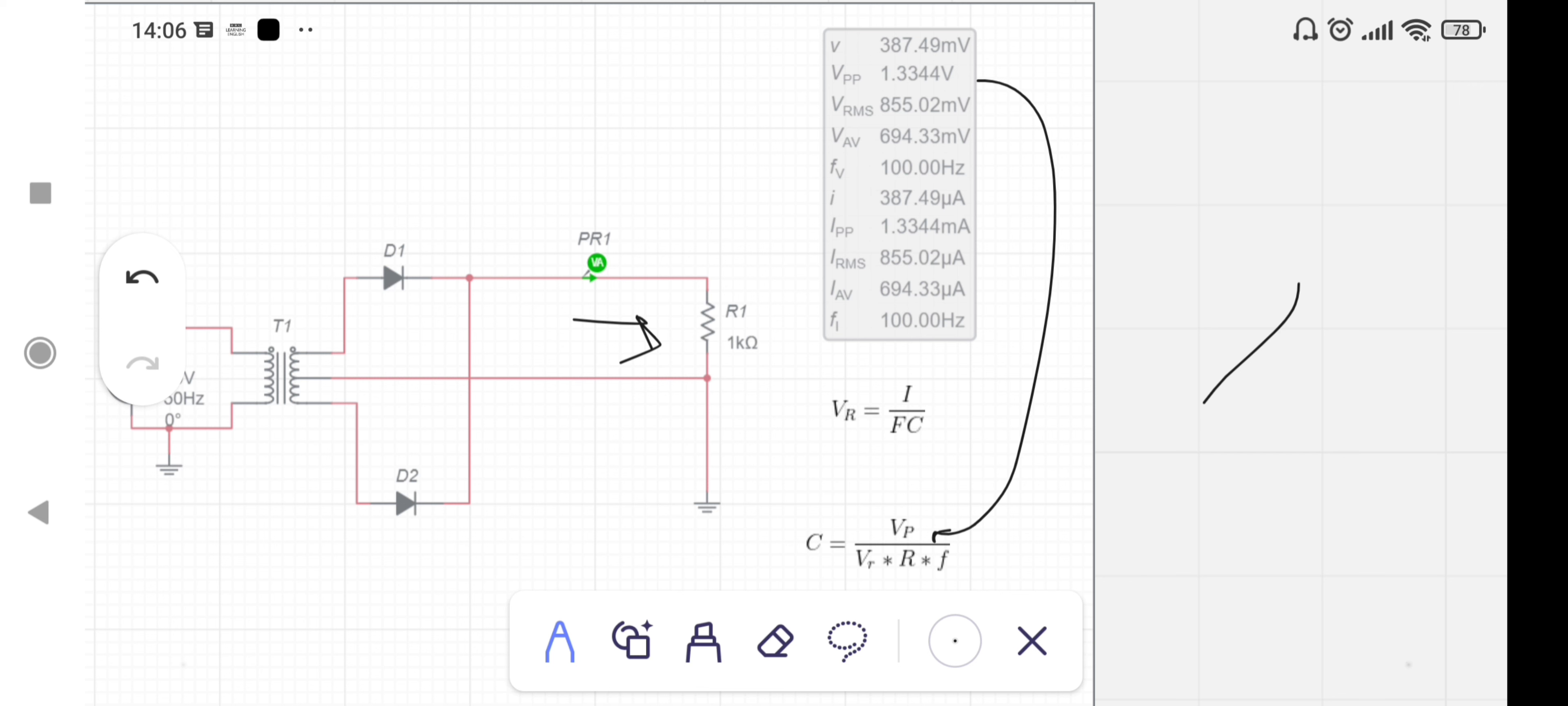VP is 18.3 volts, VR is the ripple voltage, R is the load resistor with value of 1000 ohms, and F is the frequency which is 50 Hertz. Set VR equal to 0.96 volts or 5% of the peak value.